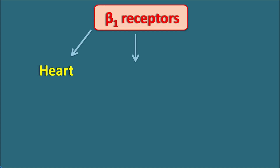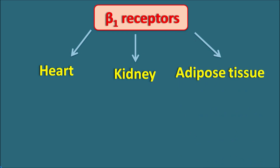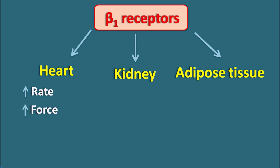Next are the beta-1 receptors. Beta-1 receptors are mainly located on the heart, as well as the kidney, and adipose tissue. Their main location is the heart, which is why they are called cardiac receptors. Since beta-1 receptors are coupled with an increase in cyclic AMP, they produce excitation of cardiac muscle. Within the heart, beta-1 receptors increase the rate of contraction — producing positive chronotropic effect — and increase the force of contraction — producing positive inotropic effect. As rate and force increase, they increase cardiac output. In this way, beta-1 receptors stimulate the heart, increasing rate and force of contraction, as well as automaticity in the cardiac muscle.